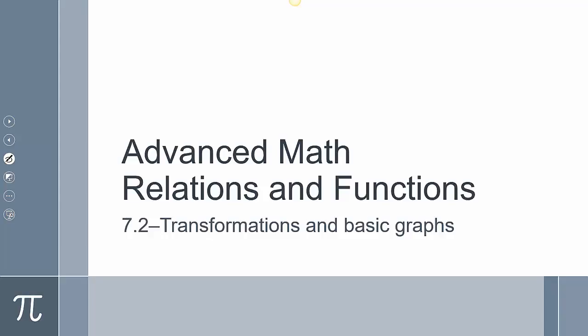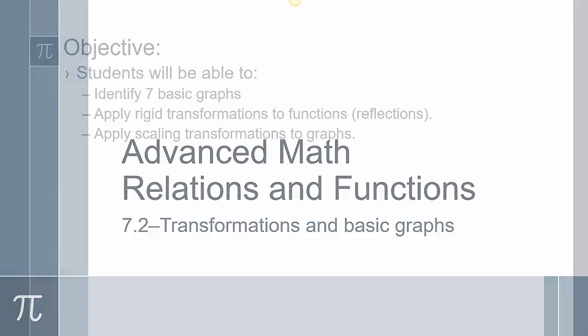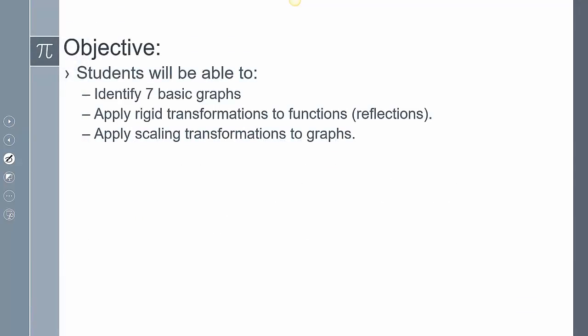Today is going to be 7-2, and we're going to be looking at transformations and basic graphs. We're still going to look at the 7 basic graphs that we talked about the other day. We're going to apply rigid transformations to functions — more specifically, we're going to look at reflections, and then we're going to apply scaling transformations to the graphs.